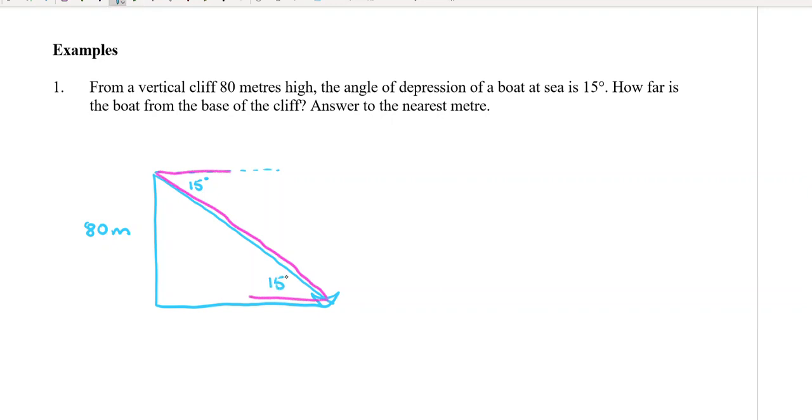Would be the same thing as having it down there. So you don't need to give a reason, you don't need to write 'alternate angles are equal' or anything like that. But as soon as you see an angle of depression, you go, 'Well, I can move it down there because of the alternate angles.' This would have to be a right angle because the cliff is vertical and the water is horizontal.